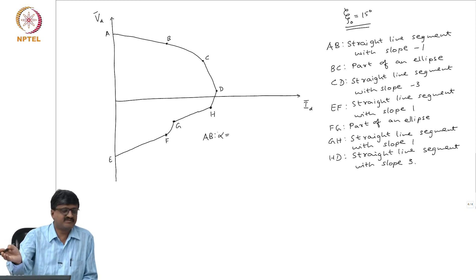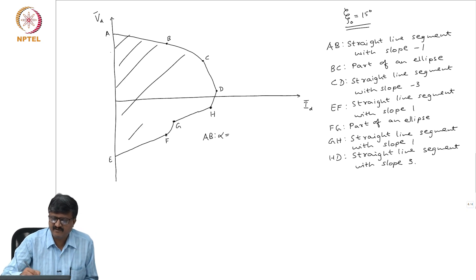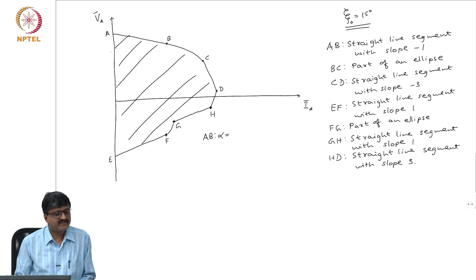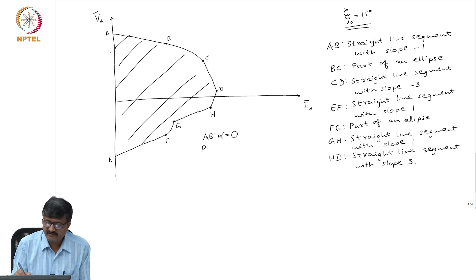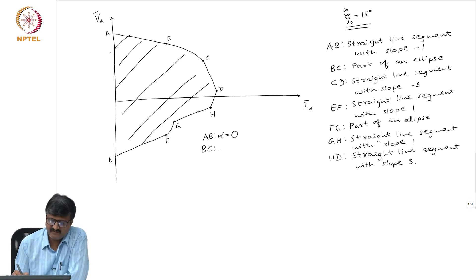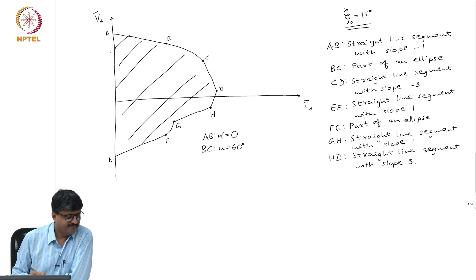This is the region of operation which is possible. AB corresponds to constant alpha, and it actually corresponds to alpha equal to 0. Then BC — it may not be very obvious what this corresponds to — the answer is the ellipse corresponding to U equal to 60 degrees.